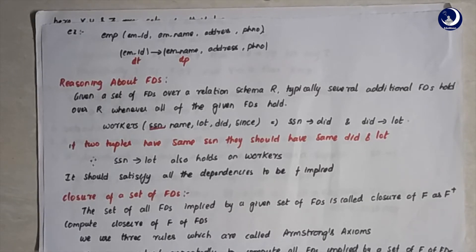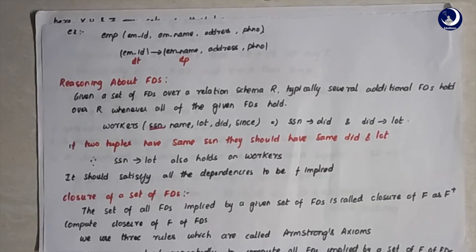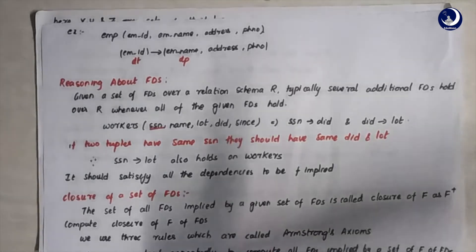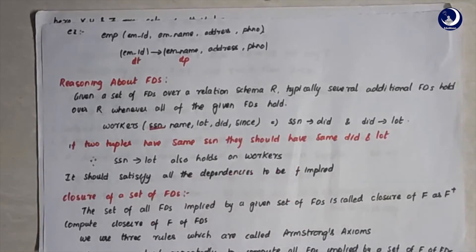There are certain conditions that must be satisfied to say that a particular relation holds a functional dependency. Given a set of functional dependencies over a relational schema R, every additional FD holds over R whenever all the given FDs hold. You can say a particular FD holds on a relation instance only if all the FDs in that relational schema are satisfied.